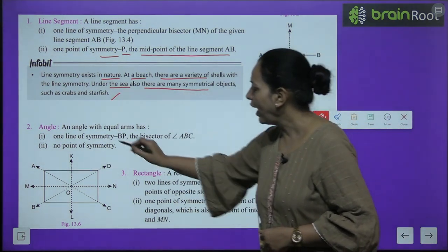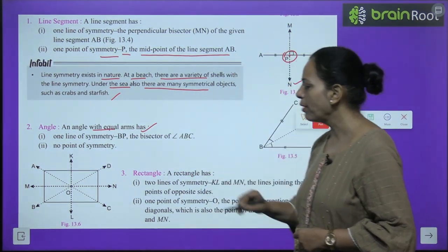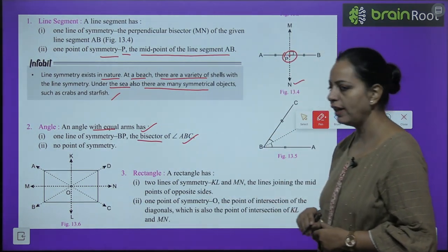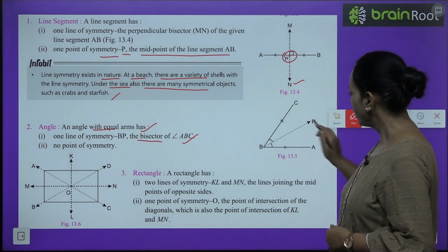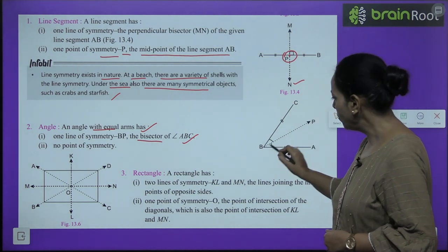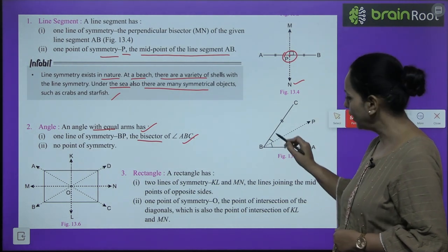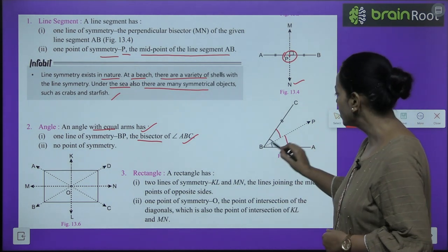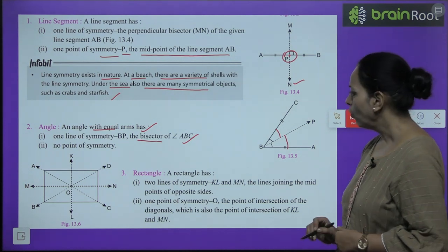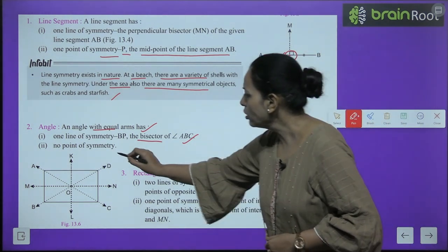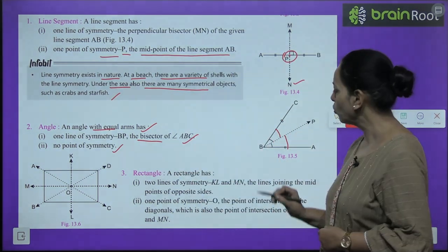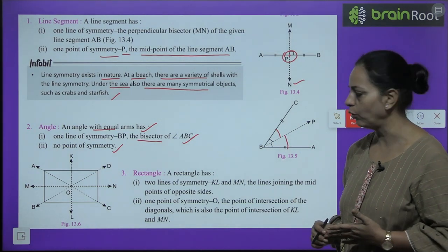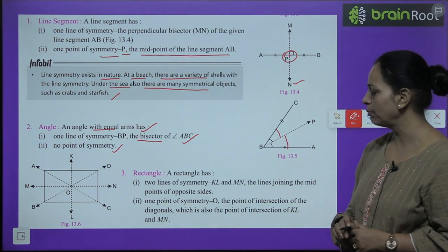The second figure is an angle. An angle with equal arms has one line of symmetry. For angle ABC, BP is the bisector, meaning BP divides the angle into two equal parts, so BP is the line of symmetry. There is no point of symmetry, because there is no point where a line is divided into equal parts.